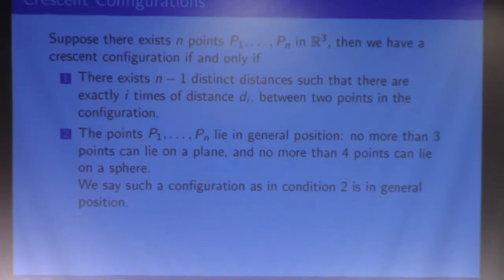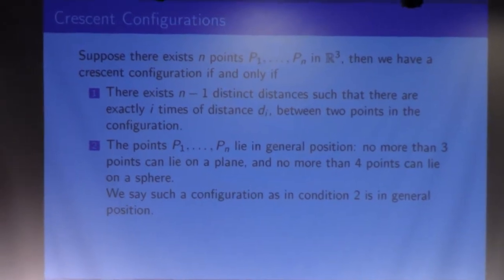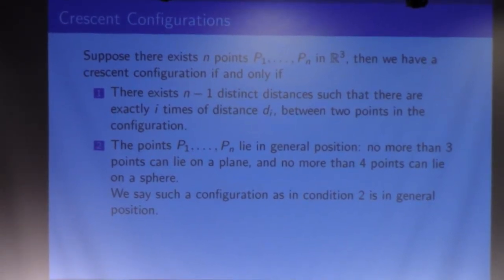First, I'm going to introduce the definition of a crescent configuration in three dimensions. It's quite similar to the 2D one. For a set of n points in R³, the crescent configuration should have exactly n minus 1 distinct distances, where each distance labeled dᵢ will appear i times. For example, d₁ one time, d₂ two times, et cetera.